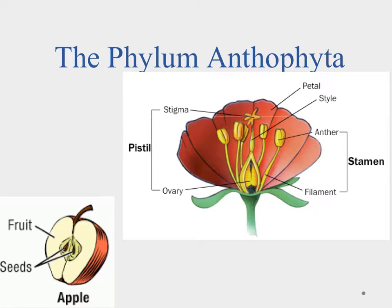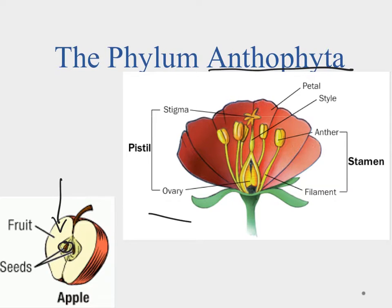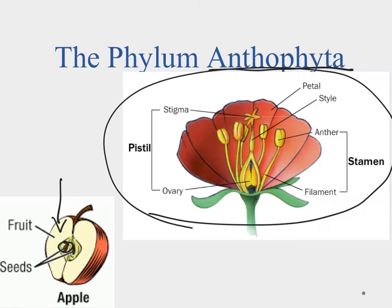Unlike the gymnosperms, we have the angiosperms in the phylum Anthophyta, and the angiosperms have seeds that are protected. The seeds are wrapped inside a fruit, which provides protection, some nutrients, and also helps with seed transport. In the Anthophyta we have the flowering plants, and the flowers are basically their organ for reproduction.